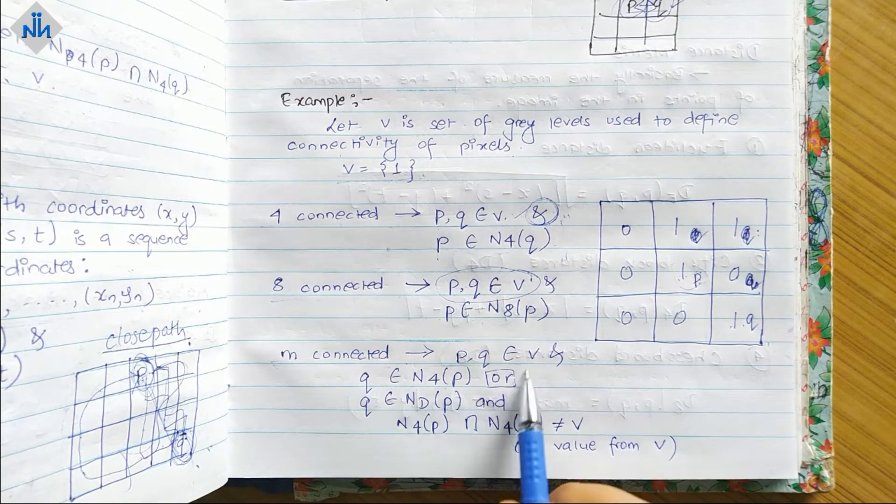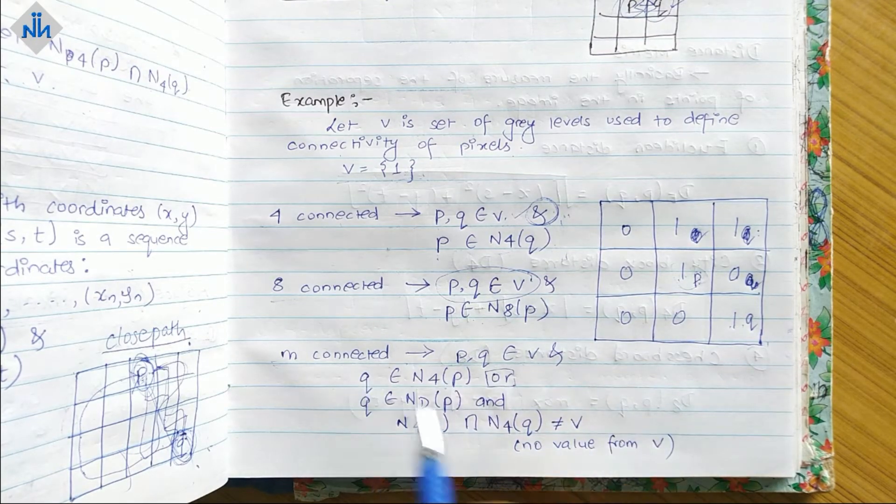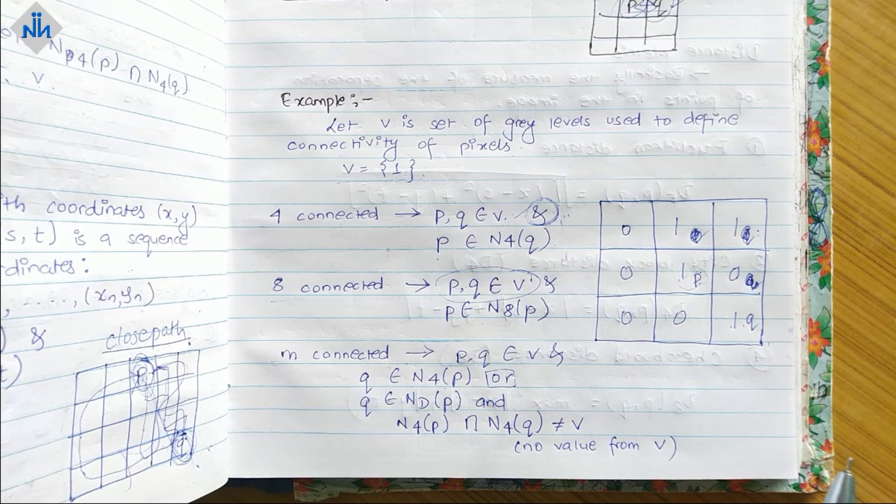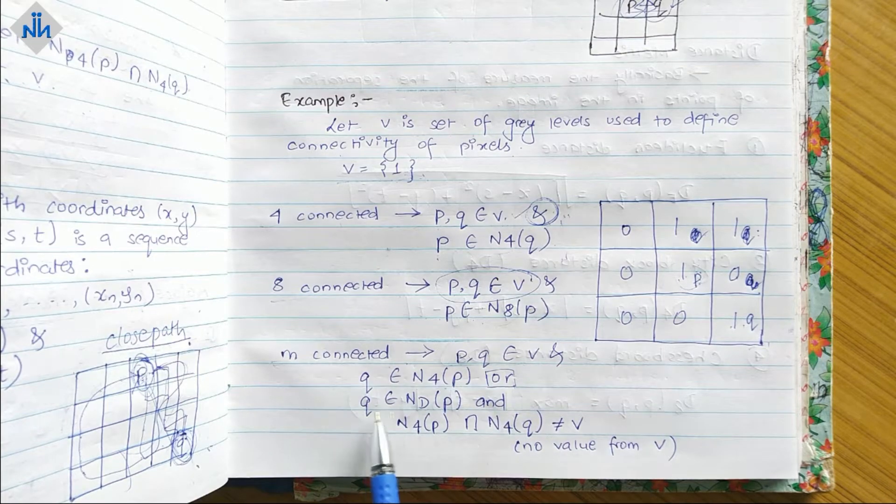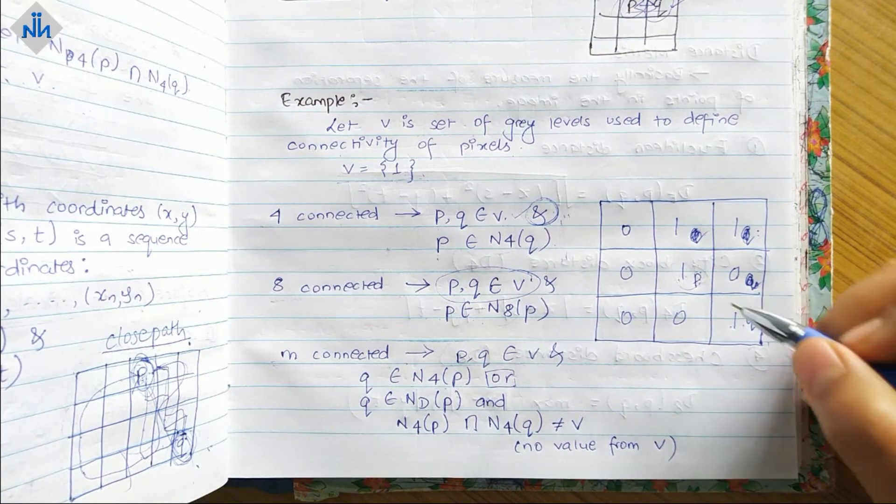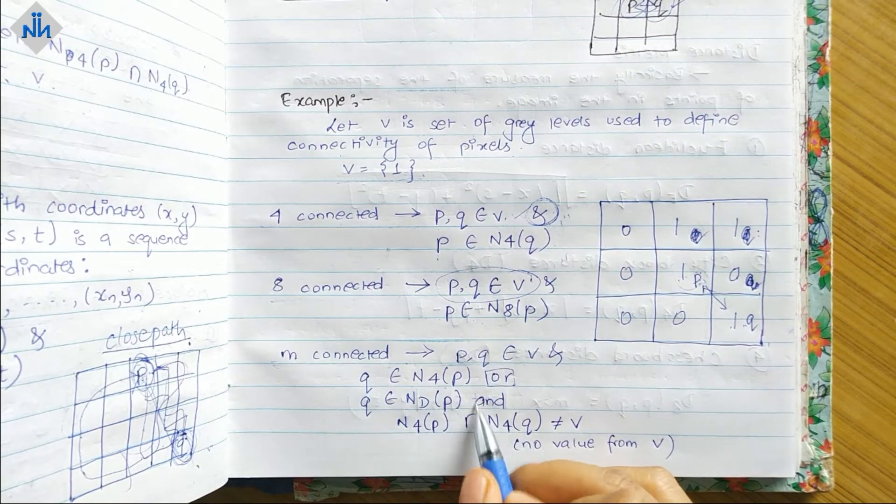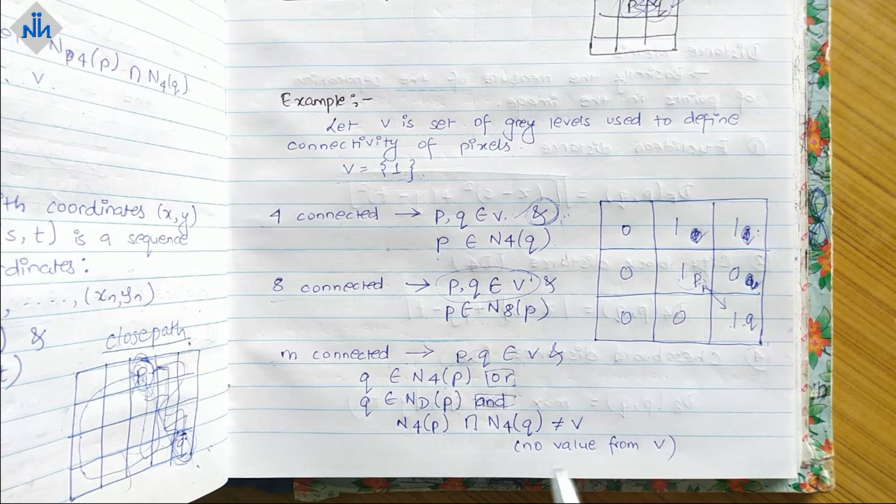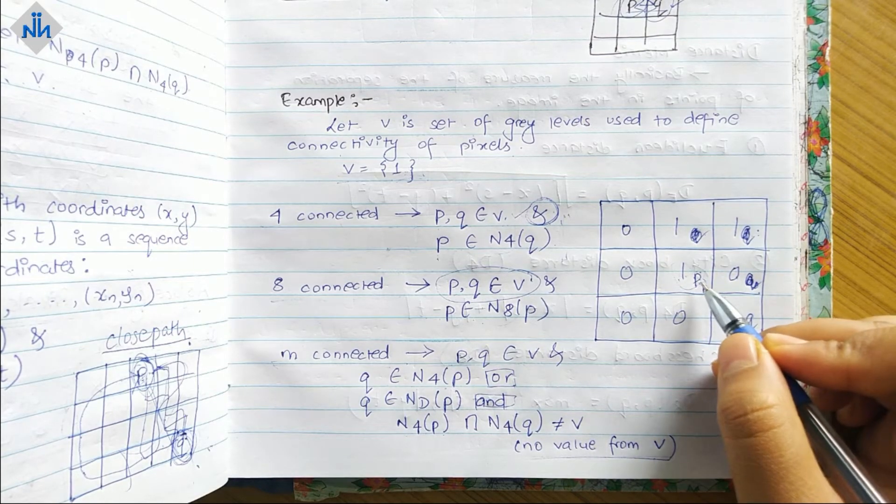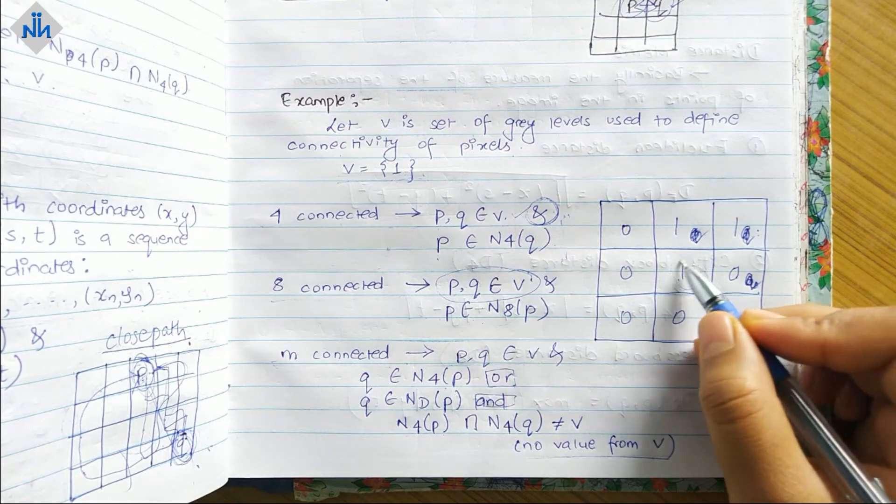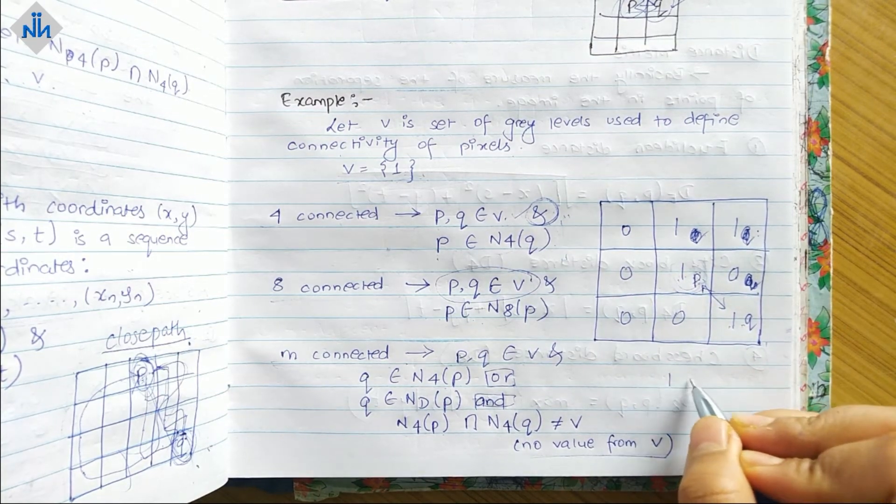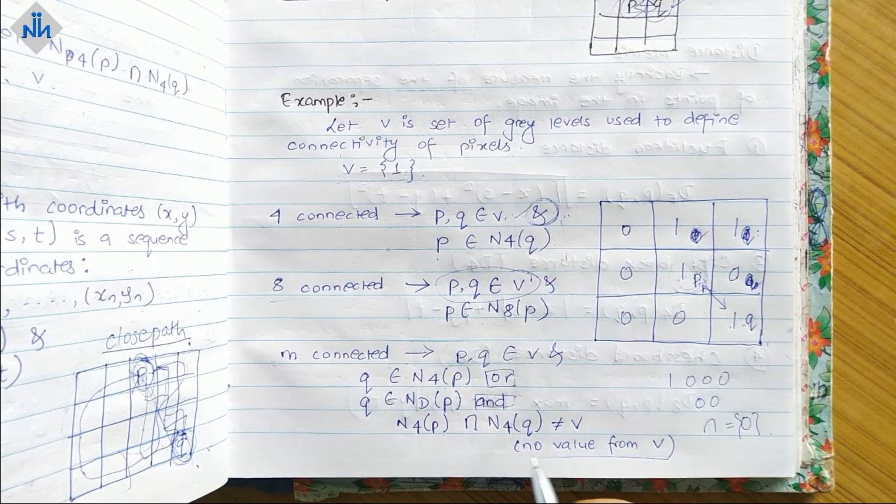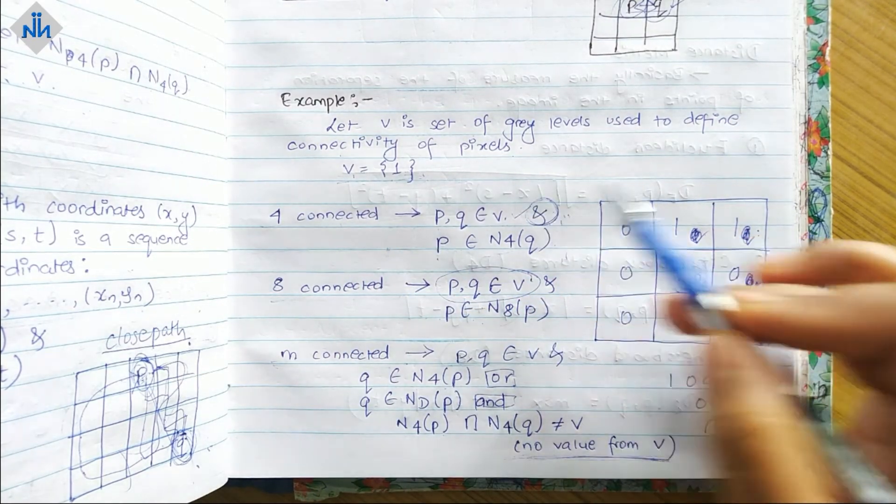If it is not, then we have OR over here, we have another condition that we can check. This over here is same as M adjacency. Q belongs to ND of P - is it a diagonal neighbor? Yes it is, so it is satisfying this. After that we have an AND condition: N4(P) intersection N4(Q) should not be any value from V. If we find out the N4 of P we will have 1, 0, 0, 0, and for Q we will have 0, 0. So the intersection will be 0. Is it any of the value from V? No it is not, so yes it is M connected.